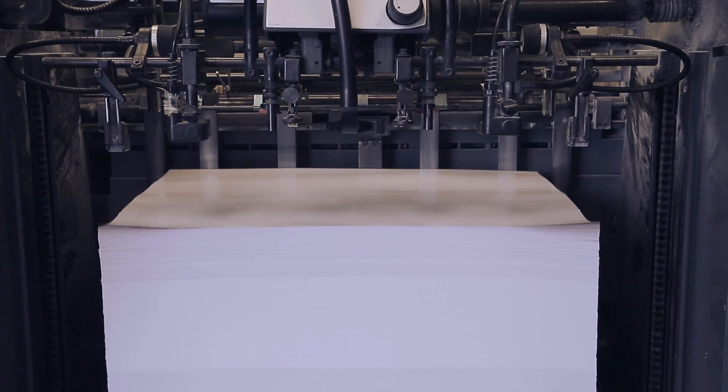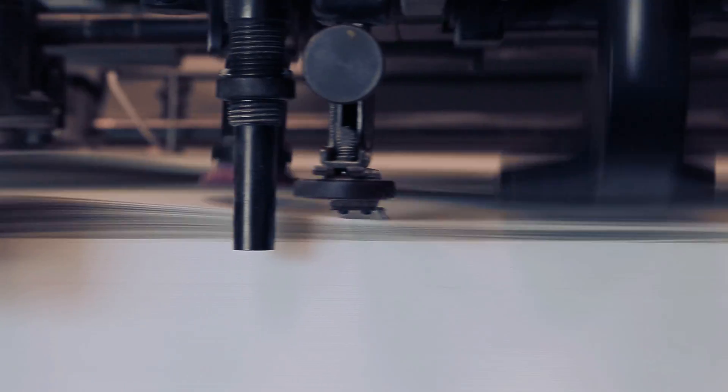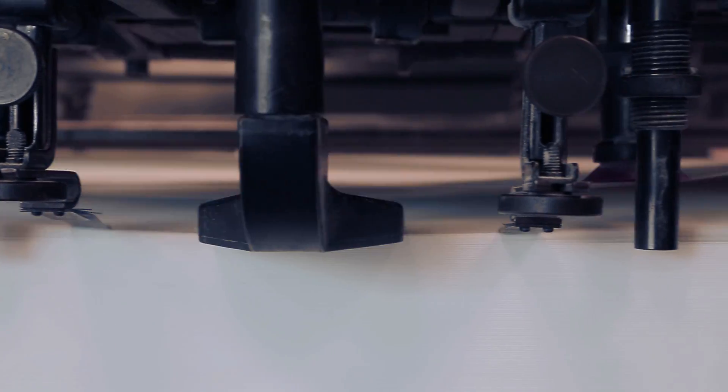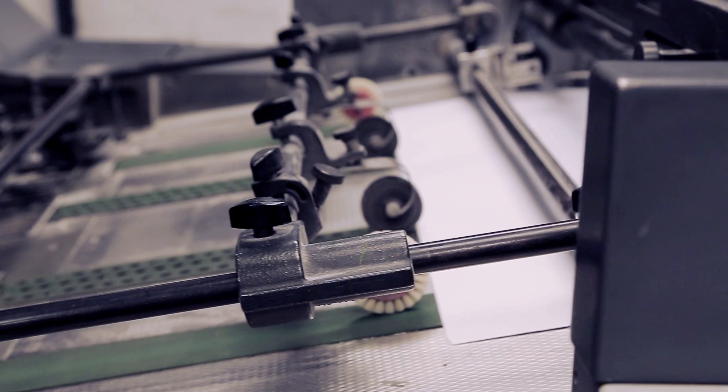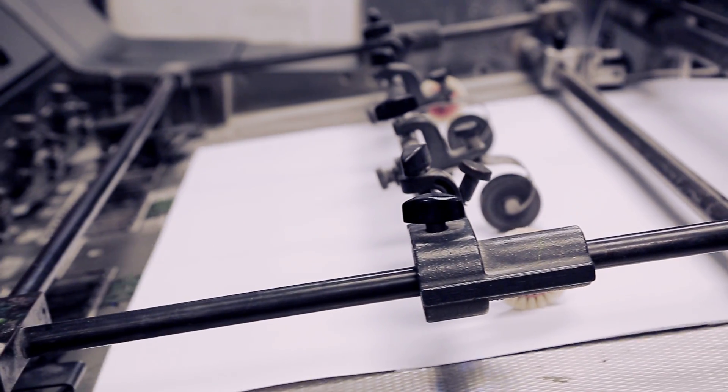The stack of paper is lifted into position. A sheet separation unit separates the paper with jets of air or a vacuum to ensure that only one sheet is sent through the press at any one time.